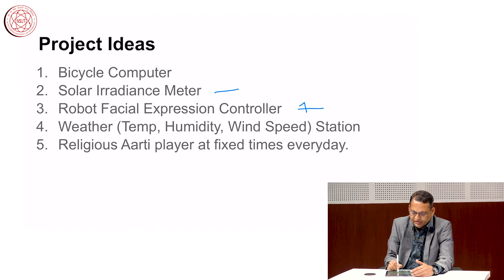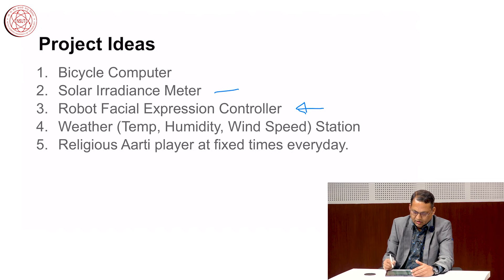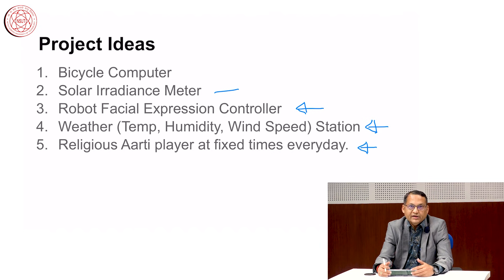You can create a project which controls the facial expressions of a robot — moving the eyes, eyelids, and lips — and if you attach suitable sensors, the robotic face could respond to the environment. You can create a weather station that records temperature, humidity, and wind speed and posts the data on the cloud. And you can build a religious aarti player that plays at fixed times, perhaps in a temple or at home. These are some of the project ideas — I hope you can utilize them, adapt them, search the internet for newer ideas, and build a great project. I wish you the very best in your pursuit of building a wonderful project.